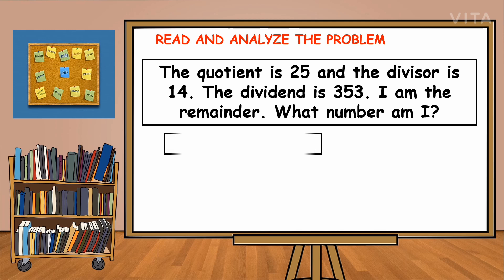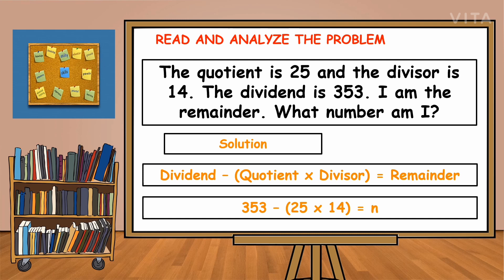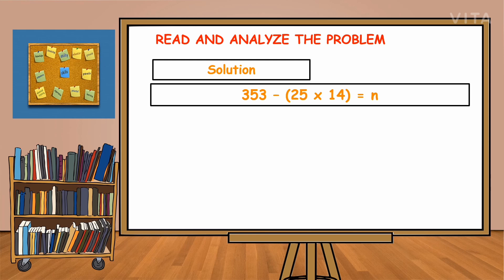Let us solve the problem. The solution is: dividend minus the quotient and divisor multiplied together to get the remainder. So again, the dividend will be subtracted by the product of quotient and divisor to get the remainder. We substitute the given numbers into our number sentence or formula.